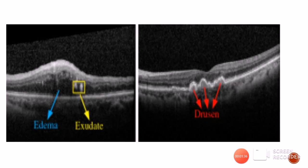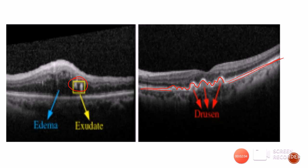It can sometimes be difficult to differentiate hard exudates from drusen just by looking at the retina, and OCT is helpful in these cases. On OCT, hard exudates are clearly in the outer plexiform layer with a shadowing effect, whereas drusen show a hyper-reflective RPE with a lump-bump appearance on the RPE — as discussed in the previous video. OCT can therefore easily differentiate between exudates and drusen.